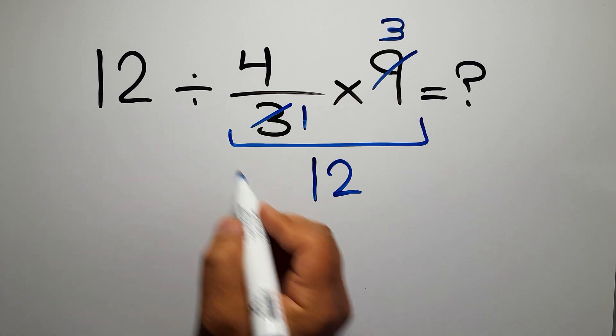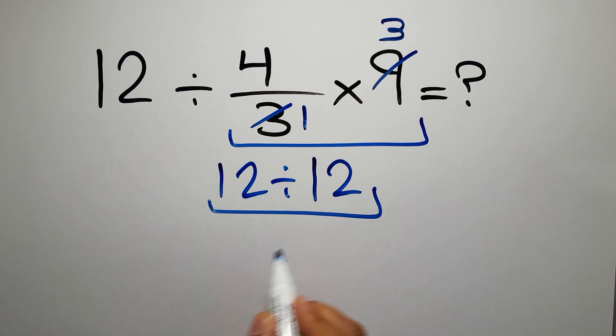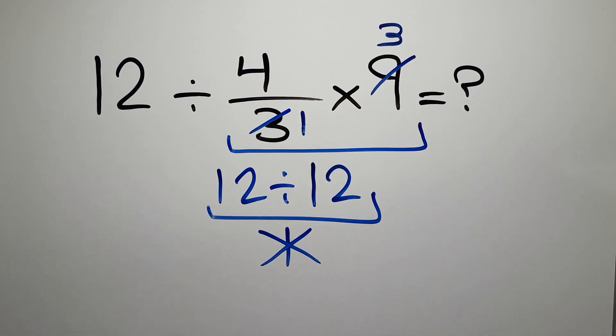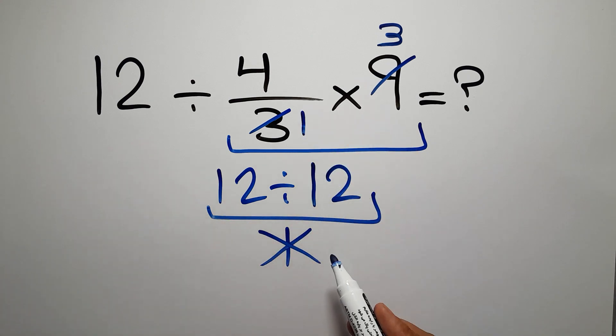And 12 divided by 12, which equals 1. But this answer is not correct. Because in mathematics, we can't just go left to right or prioritize the operations however we like. We need to follow the order of operations.